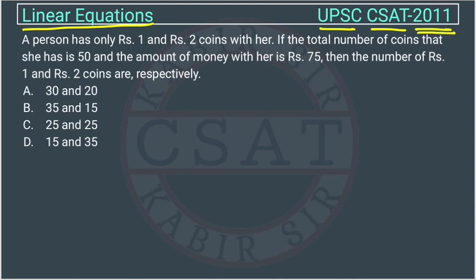A person has only rupee 1 and rupee 2 coins with her. If the total number of coins that she has is 50 and the amount of money with her is rupees 75, then the number of rupee 1 and rupee 2 coins are respectively.